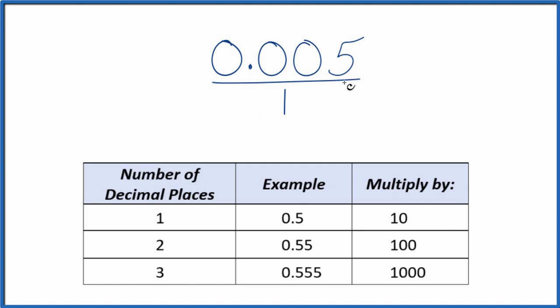I can see that we have 1, 2, 3 places after the decimal point. When we have 3 places after the decimal point, we're going to multiply by 1,000.